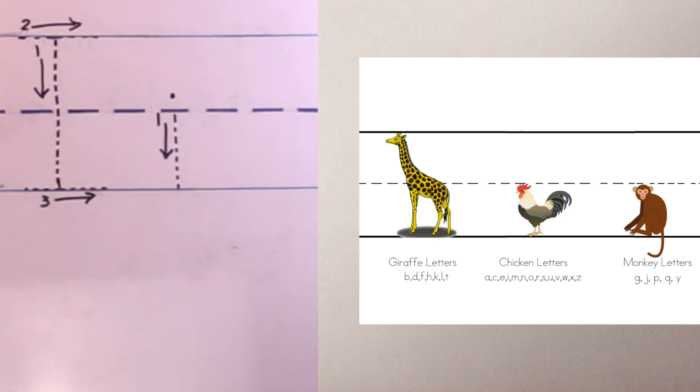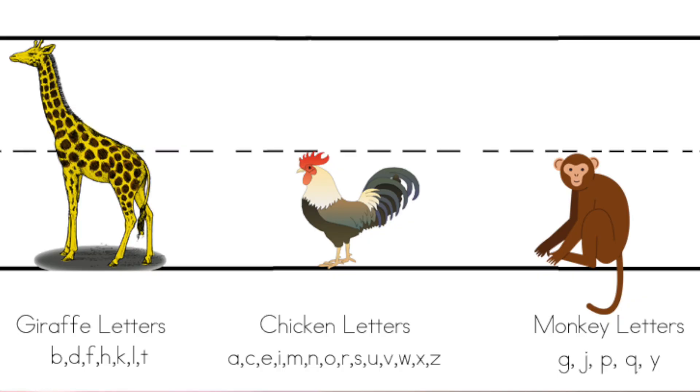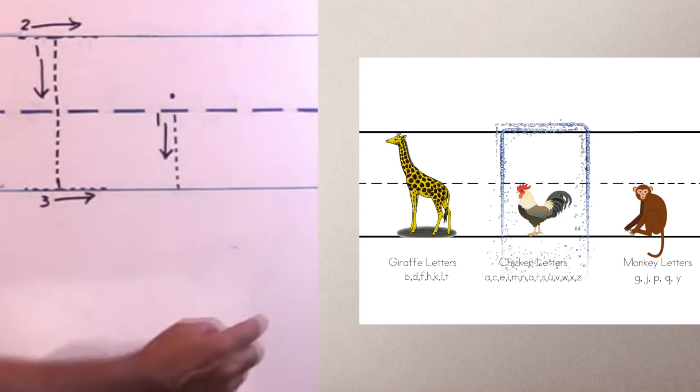Today, we're going to learn how to write the letter I. Do you remember what animal letter the lowercase i is? That's right, it's a chicken letter.